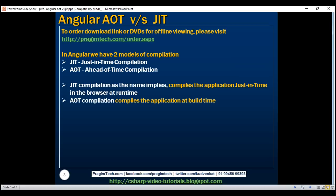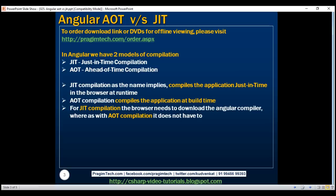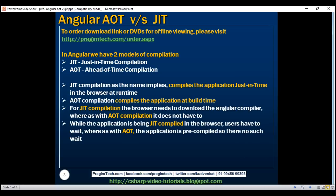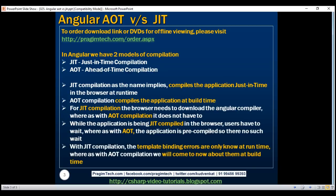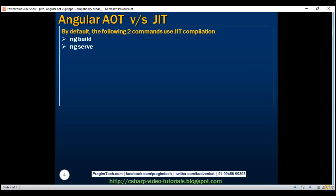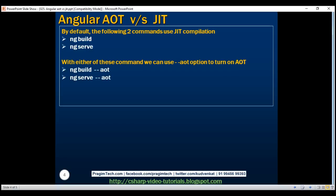Let's quickly recap what we have discussed. For JIT compilation, the browser needs to download the Angular compiler, whereas with AOT compilation it does not. While the application is being JIT compiled in the browser, users have to wait, whereas with AOT the application is pre-compiled so there is no such wait. With JIT compilation, template binding errors are only known at runtime, whereas with AOT we come to know about them at build time. By default, both ng build and ng serve use JIT compilation, but with either command we can use the --aot option to turn on ahead of time compilation. With a production build, by default, we get ahead of time compilation; if you want to turn off AOT for a production build, simply set the --aot option to false.